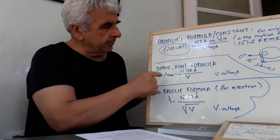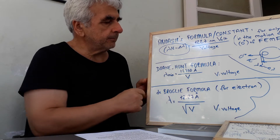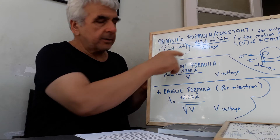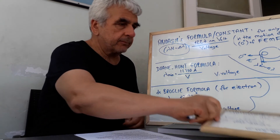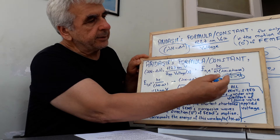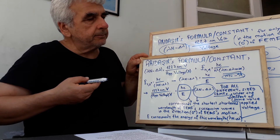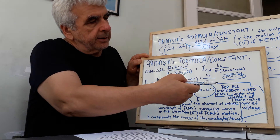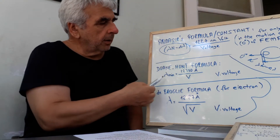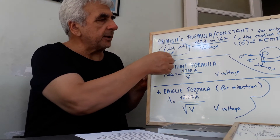Lambda-min, as named in the Duane-Hunt formula, is Lambda-N minus Delta Lambda cosine zero degrees. Remember my formula: Lambda-N minus Delta Lambda cosine alpha, in the direction of the source electron motion form. Lambda-N minus Delta Lambda cosine zero degrees is equal to Lambda-N minus Delta Lambda. Lambda-min named in the Duane-Hunt formula is Lambda-N minus Delta Lambda, in my terminology and my formulas.